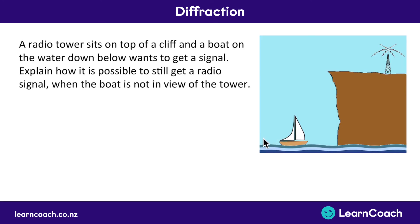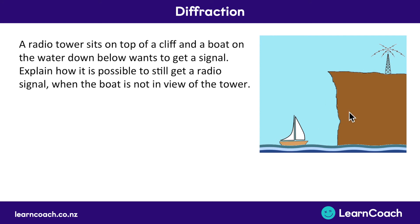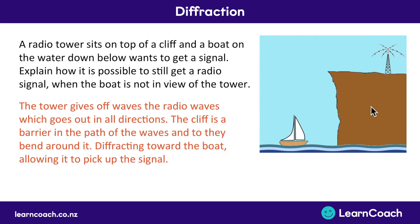Let's look at a type of question you might have to answer in a slightly more complicated way. Here we have a radio tower sitting on top of a cliff and a boat on the water below that wants to get a signal from the radio tower. Explain how it is still possible to get a radio signal when the boat is not in direct view of the tower — there's a cliff sitting in the way. The reason, you might have guessed, is because of diffraction.